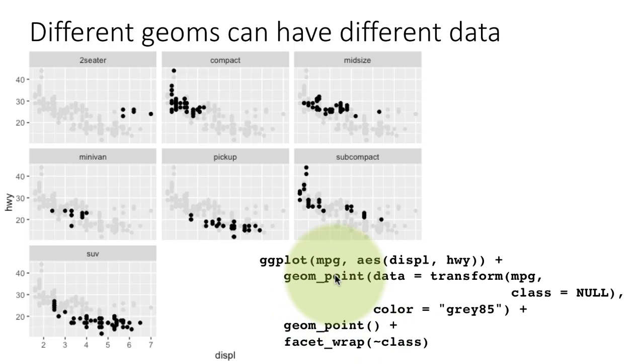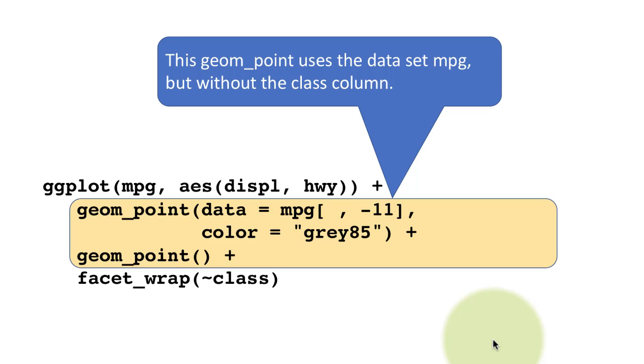Then we said color is a certain shade of gray, and then you have the regular geom_point. For this geom_point, the data is coming from the ggplot setting mpg. So this is going to plot all the points, but we are doing a facet_wrap. What's going to happen is that this particular layer is going to get faceted, but this layer cannot get faceted because the faceting is based on the variable called class, and this layer simply doesn't even have that variable.